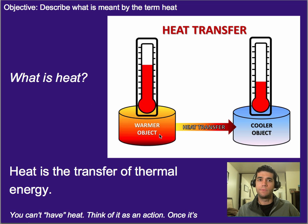So if we have a warmer object, it doesn't have more heat. What it has is more thermal energy, whereas a cooler object would have less thermal energy. And so heat is transferred from one to the other if they're in contact.